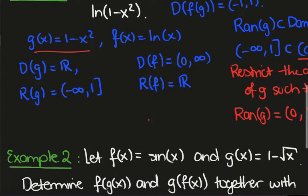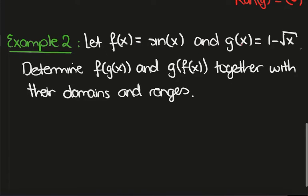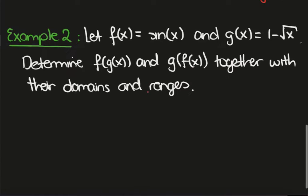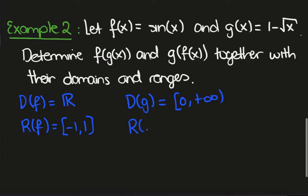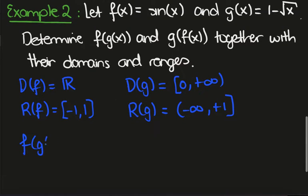Let's look at another example. Let f(x) = sin(x) and g(x) = 1 - √x. Determine the formulas for the composites together with their domains and ranges. The domain of f is ℝ, the range of f is [-1, 1]. The domain of g is [0, ∞) and the range of g is (-∞, 1].